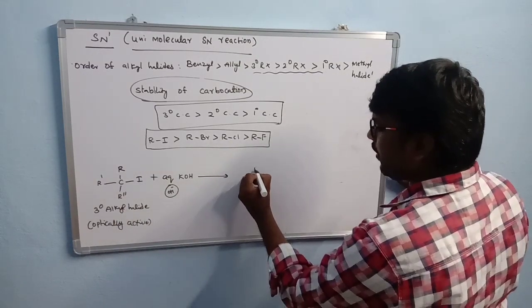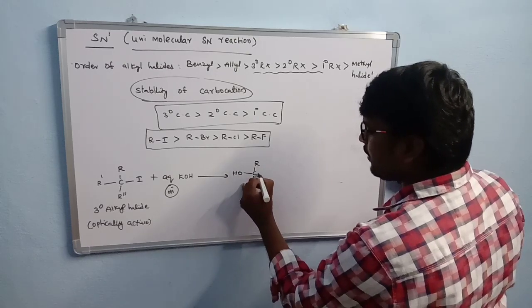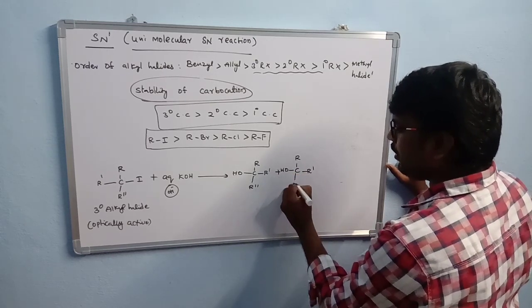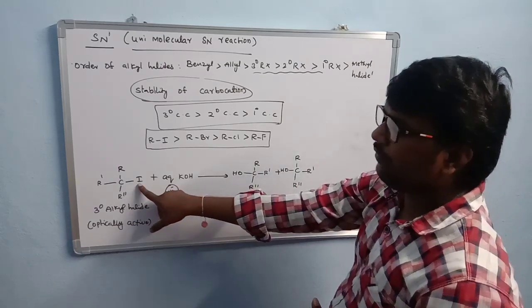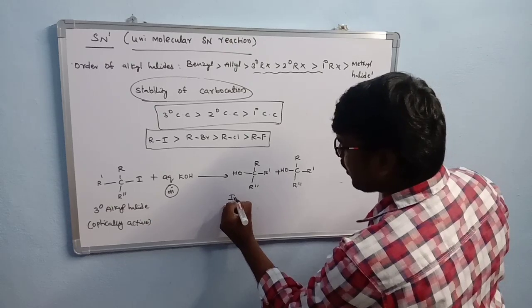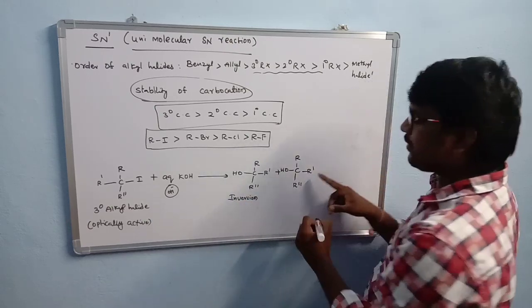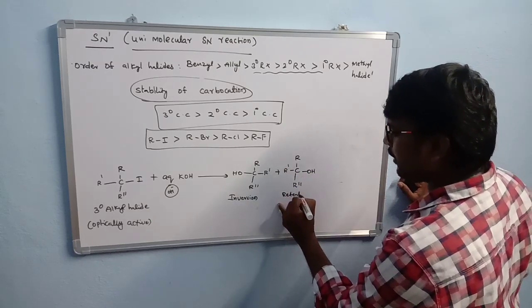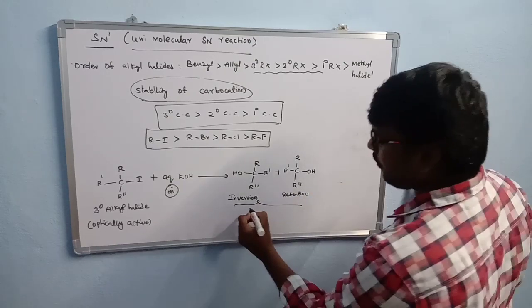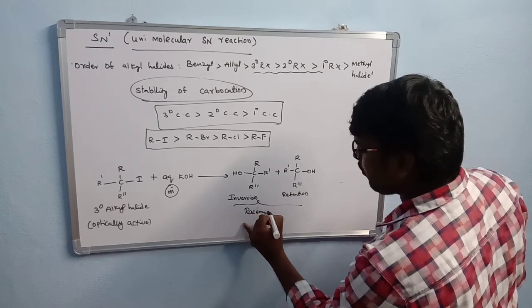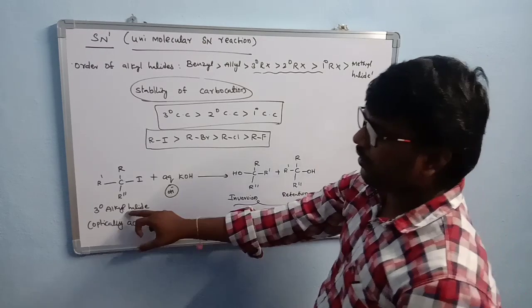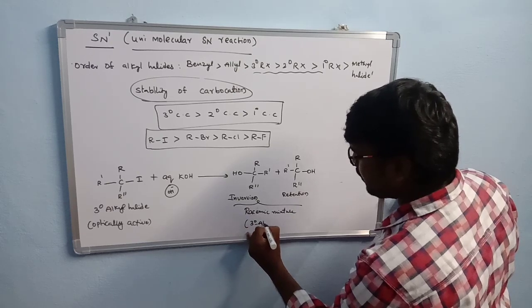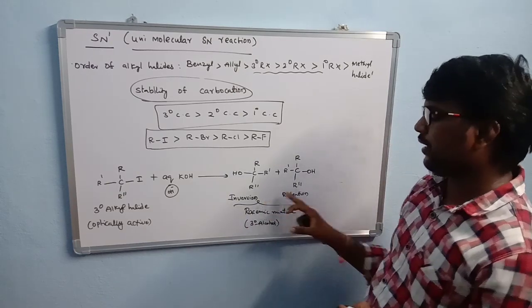The products obtained are two alcohols: one is C(R)(R')(R'')(OH) where OH is on the opposite side from where the leaving group was — this is the inversion product — and another where OH is substituted in the same position as the leaving group — this is the retention product. Both inversion and retention products are formed, giving a racemic mixture.